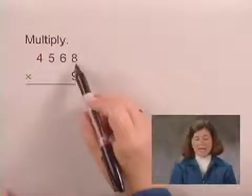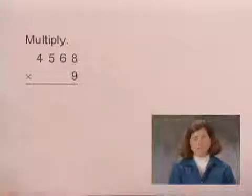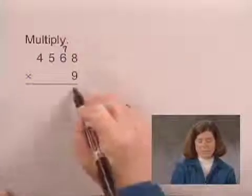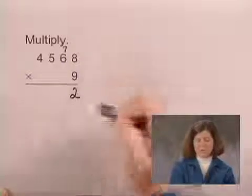To begin, we'll multiply 9 times 8, which is 72. We'll write the 7 above the 6, and write the 2 below.